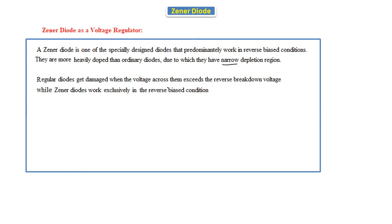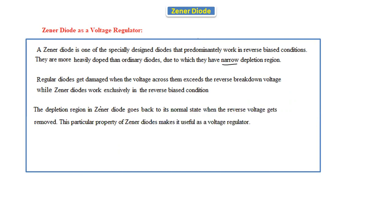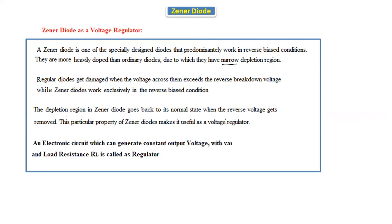Regular diodes get damaged when the voltage across them exceeds the reverse breakdown voltage. The Zener diode works exclusively in the reverse bias condition because it is designed only for that purpose — it is a special purpose device. Nothing will happen to the Zener diode beyond breakdown, while a normal diode will be damaged. The depletion region in the Zener diode returns to its normal state when the reverse voltage is removed — this property makes it useful as a voltage regulator.